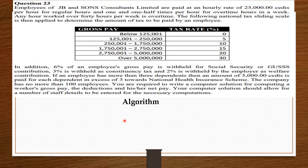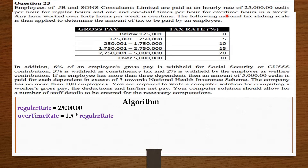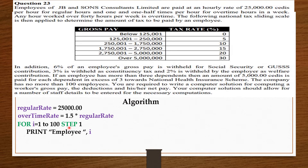From the question, employees are paid at an hourly rate of 25,000 cities for regular hours and one and a half times per hour for overtime. The company has no more than 100 employees, so we want to compute the gross pay, deductions, and net pay of every employee. We are going to set a for loop which will run from 1 to 100 and do the computations for each employee.